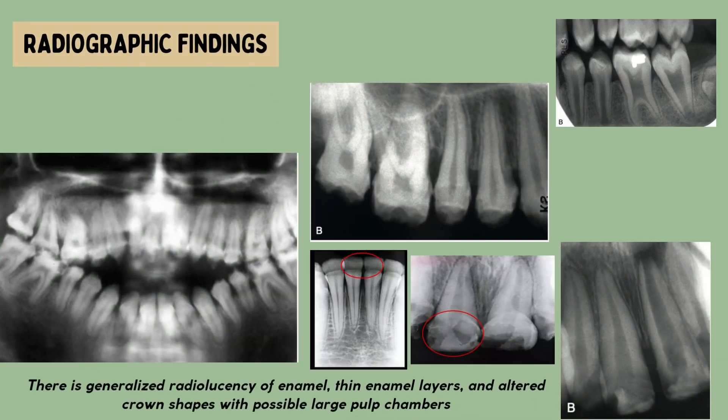Amelogenesis imperfecta radiographic features: there is generalized radiolucency of enamel, thin enamel layers, and altered crown shapes with possible large pulp chambers in hypomaturation types.